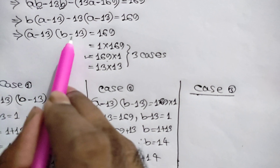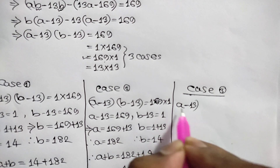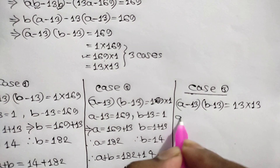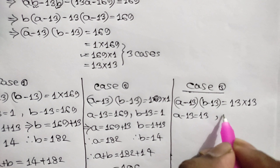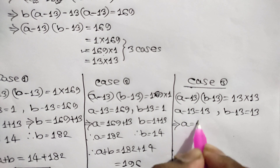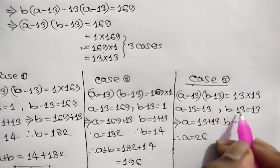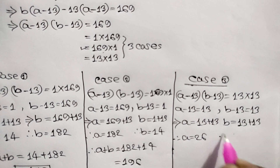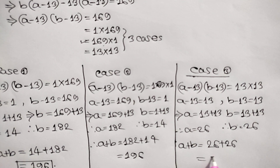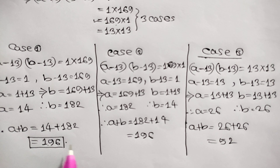Case number 3: a minus 13 times b minus 13 equals 13 times 13. So a minus 13 equals 13 and b minus 13 equals 13. Taking negative 13 to the right side, a equals 13 plus 13, so a equals 26, and b equals 13 plus 13, so b equals 26. Therefore a plus b equals 26 plus 26 equals 52. So there are two values only: 196 and 52.